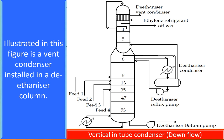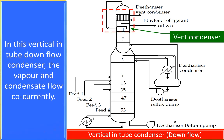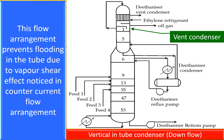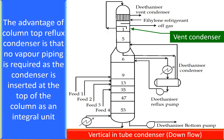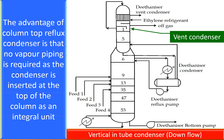A vent condenser installed in a deethanizer column is an example of a vertical in-tube condenser where vapor and condensate flow co-currently. This co-current flow arrangement prevents flooding in the tube due to the vapor shear effect noticed in counter-current flow. The advantage of a column-top reflux condenser is that no vapor piping is required, as the condenser is inserted at the top of the column as an integral unit.